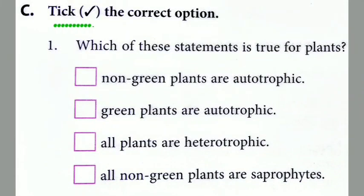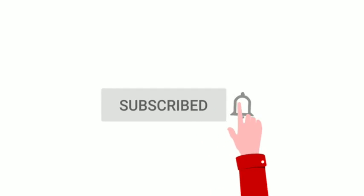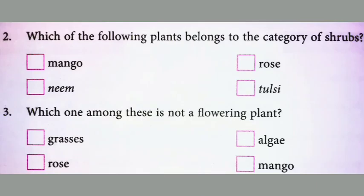Section C: Tick the correct option. Question number 1: Which of these statements is true for plants? The answer will be: green plants are autotrophic. Before the next question, please subscribe to this channel. Question number 2: Which of the following plants belong to the category of shrubs? The answer will be rose.